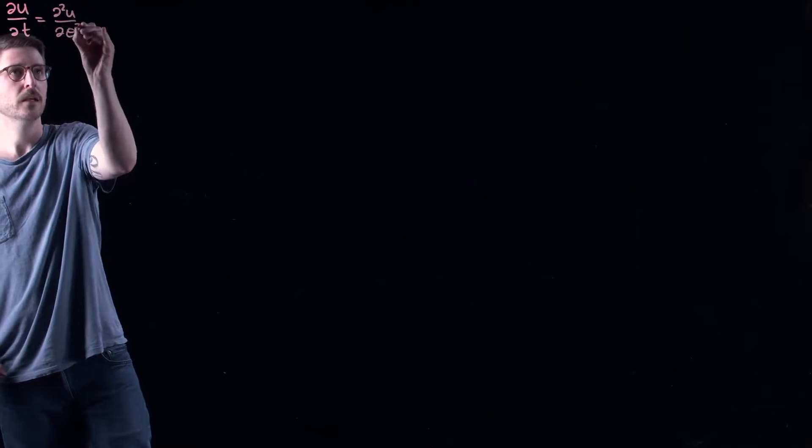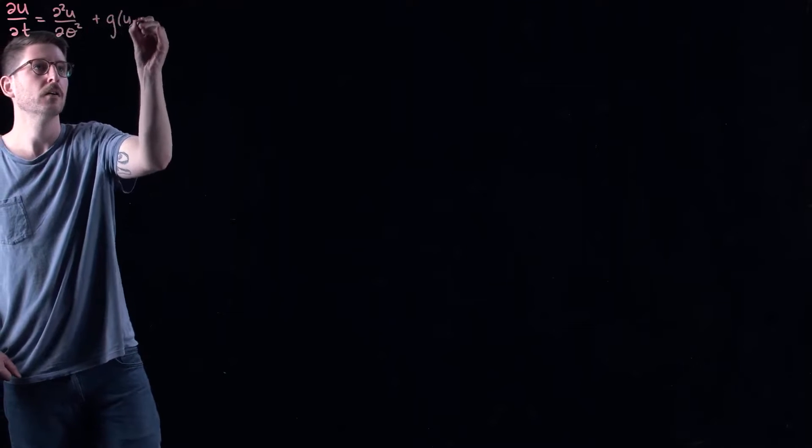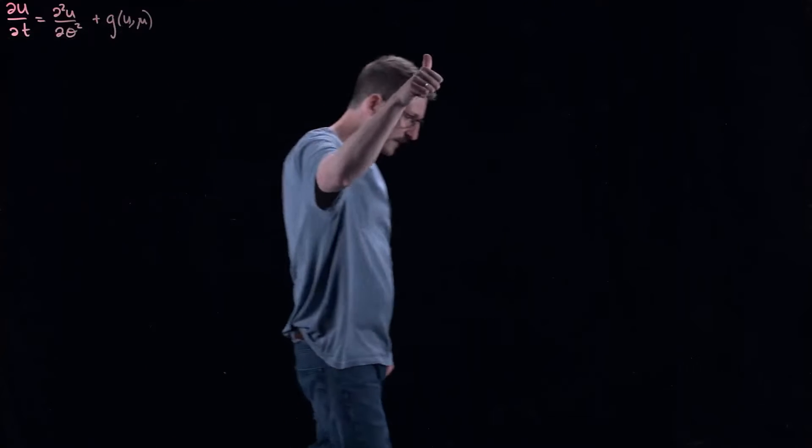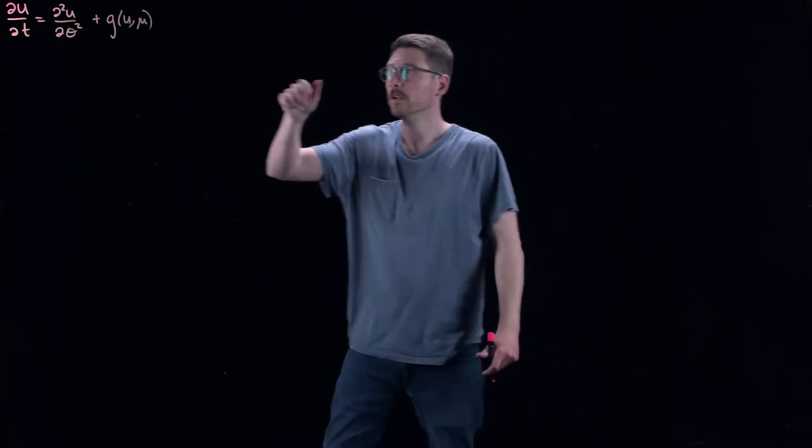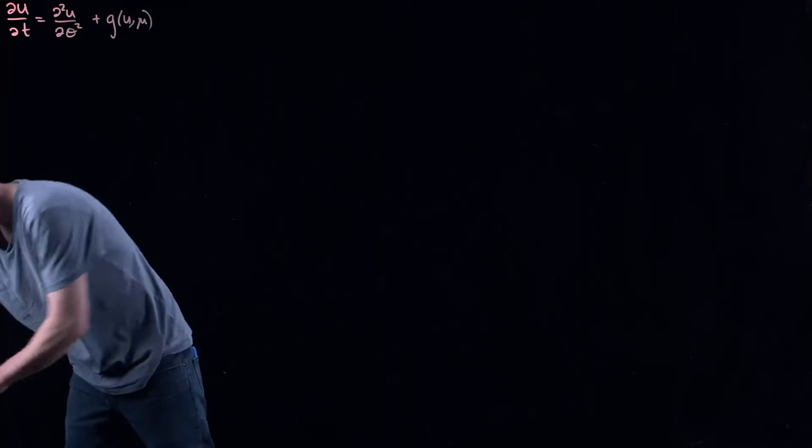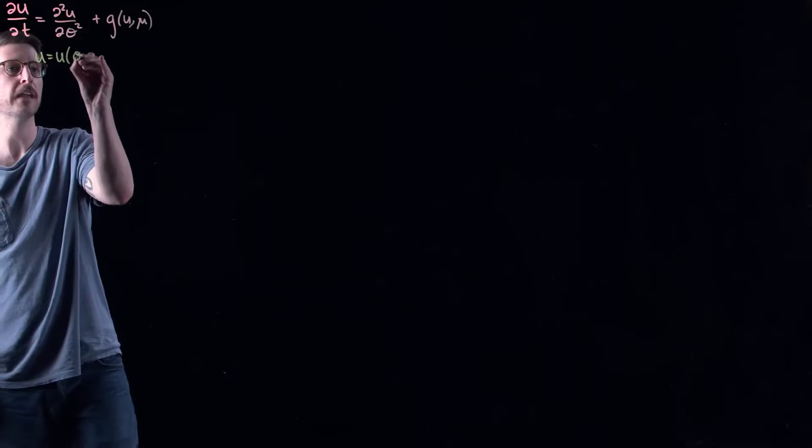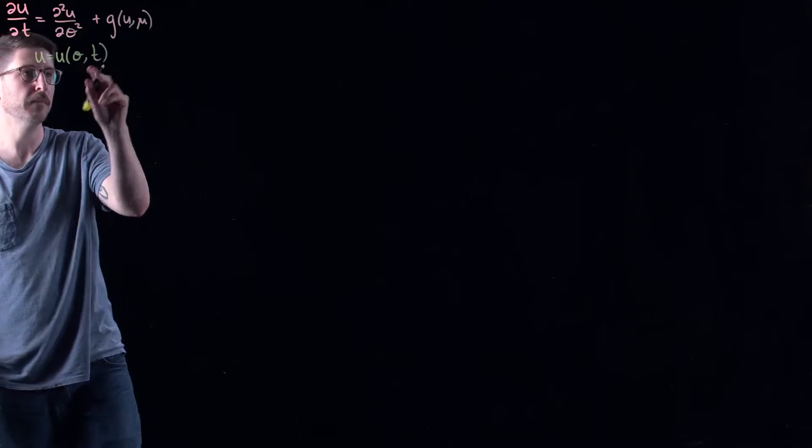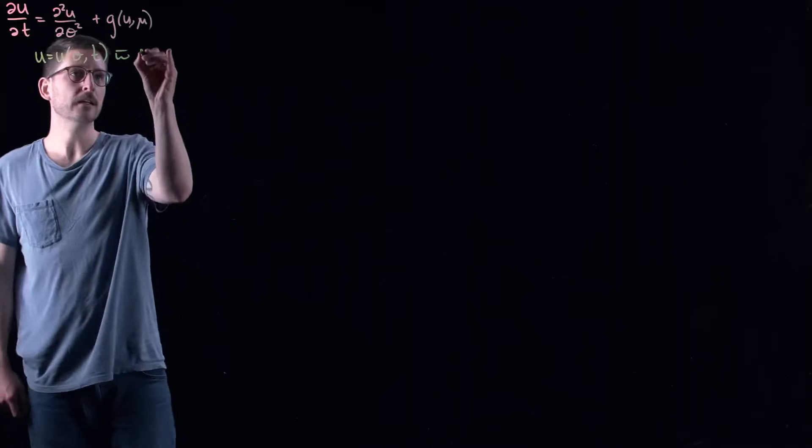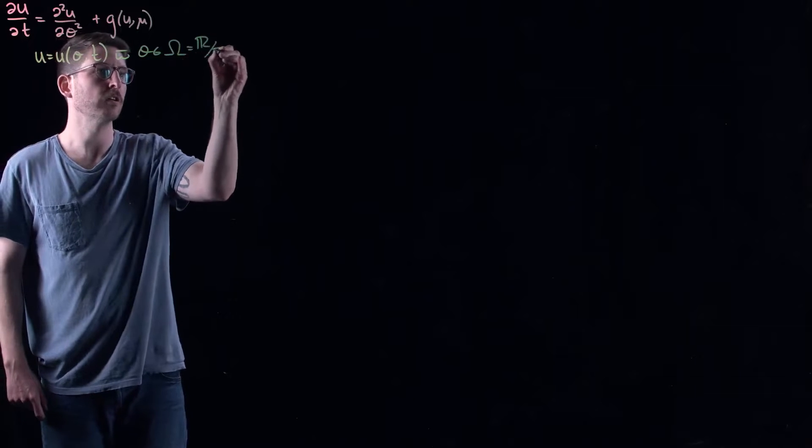In my case, I'm going to look at partial differential equations that look like this. Time derivative, check, we got a dynamical system, we're good. Second derivative in space. In this case, I'm going to have u being a function of theta, space, and t, time. In my case, theta is going to belong to what I'll call omega, which is going to be the circle. So this is just the circle.